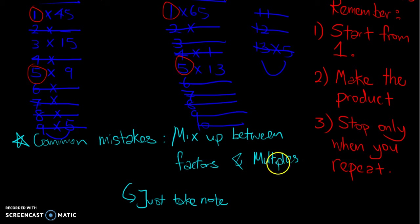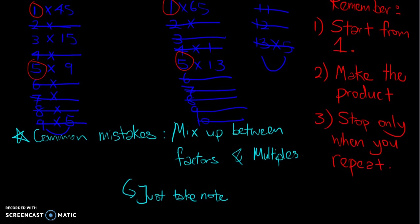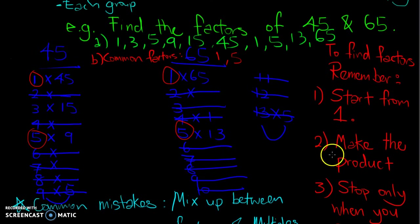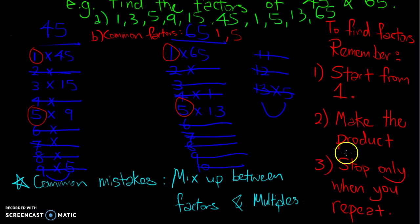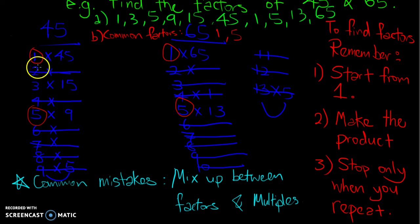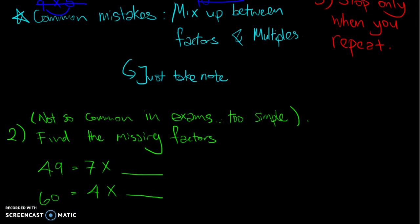A common mistake is mixing up factors and multiples — I'll give an example in the next few videos. To find factors: start from 1, find pairs that multiply to give the product, and stop when you hit a repeat. Mark a U-turn sign to remind yourself you're done.